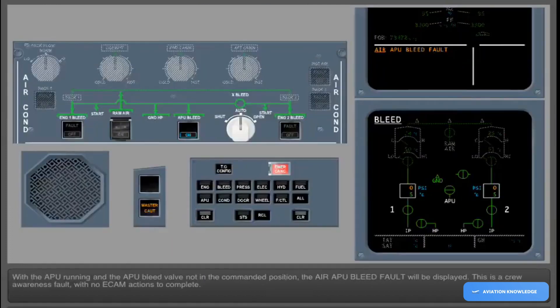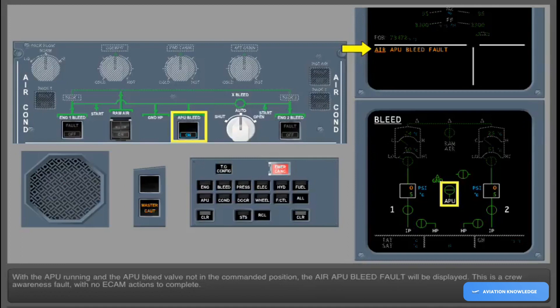With the APU running and the APU bleed valve not in the commanded position, the APU bleed fault will be displayed. This is a crew awareness fault with no ECAM actions to complete.